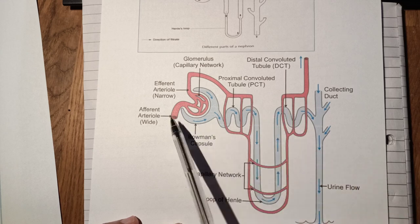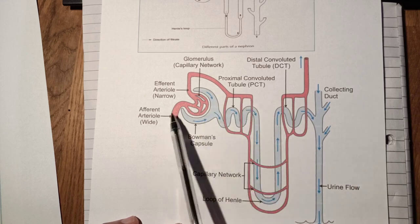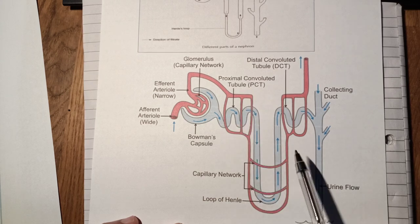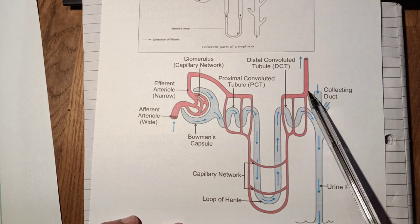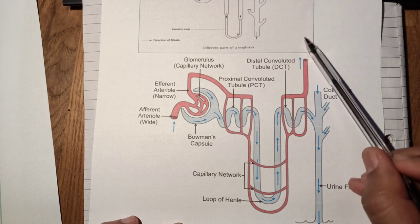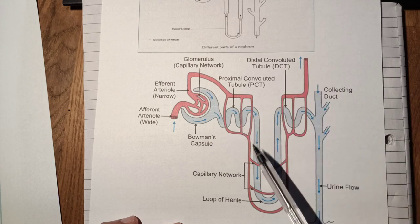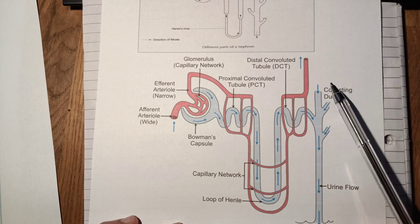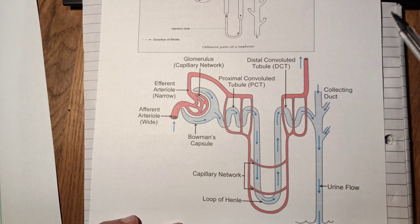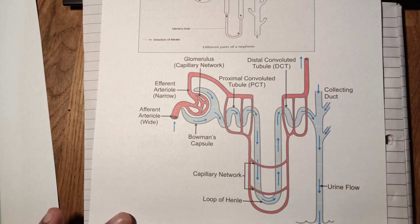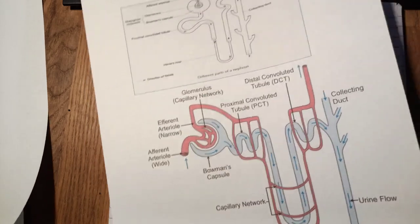This diagram shows in more detail how the renal arterioles branch — afferent and efferent — and form a network around the proximal and distal convoluted tubule and loop of Henle. The filtered blood — pure blood after excretion of nitrogenous waste, excess salt, and water — leaves as a renal venule, and all the venules collect to form the renal vein, which then enters the aorta. The collecting duct carries the urine onward.